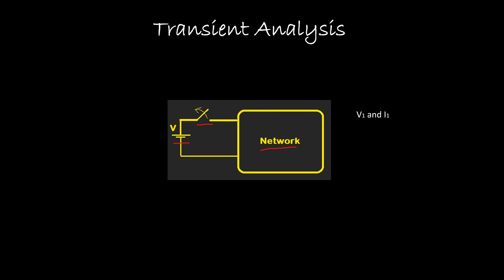Now what happens if we suddenly remove this voltage source? If we suddenly remove this voltage source, then the network will attain new values of voltage and current — let us assume that voltage and current as V2 and I2. But to reach these new values V2 and I2, the network will take some time. This time is known as the transient time or transient period of time, which is of very few microseconds up to few milliseconds.